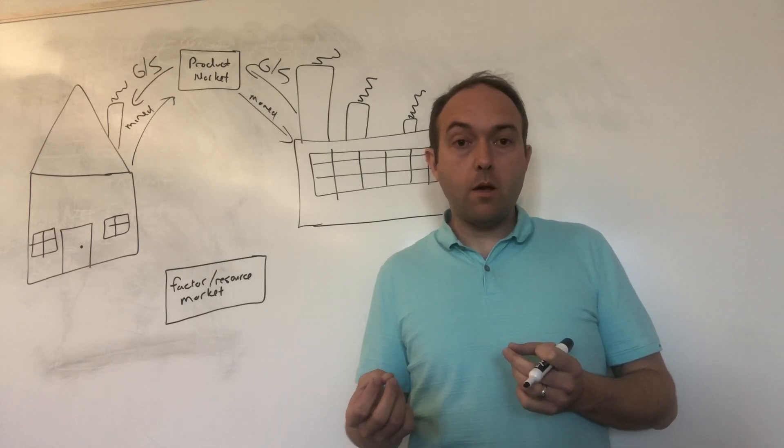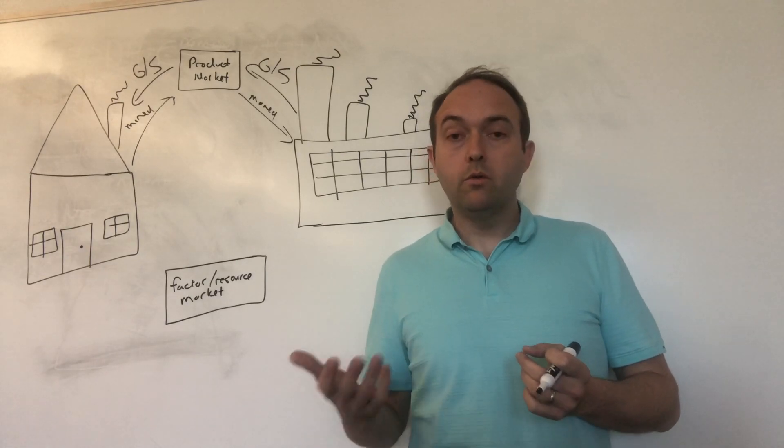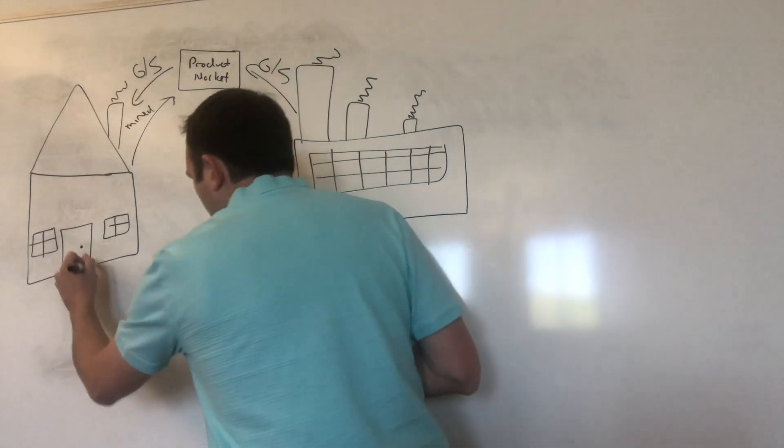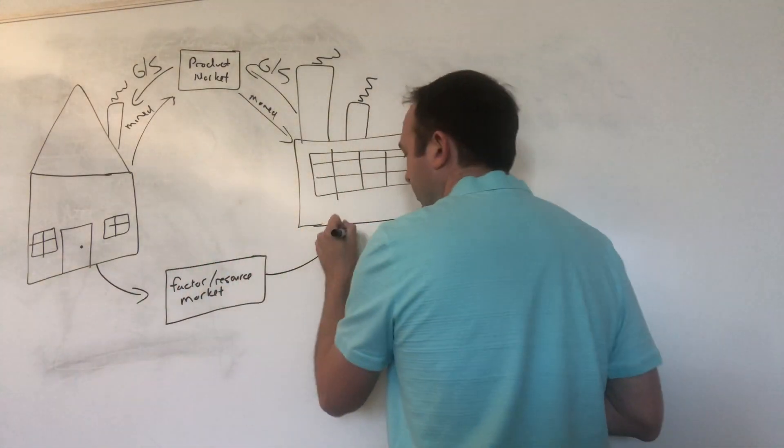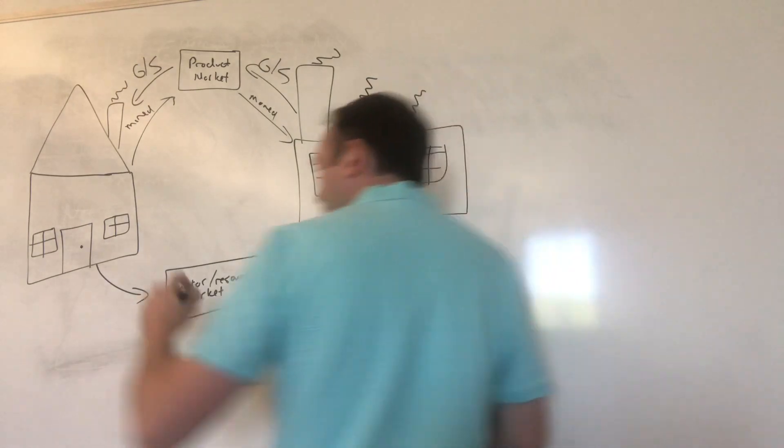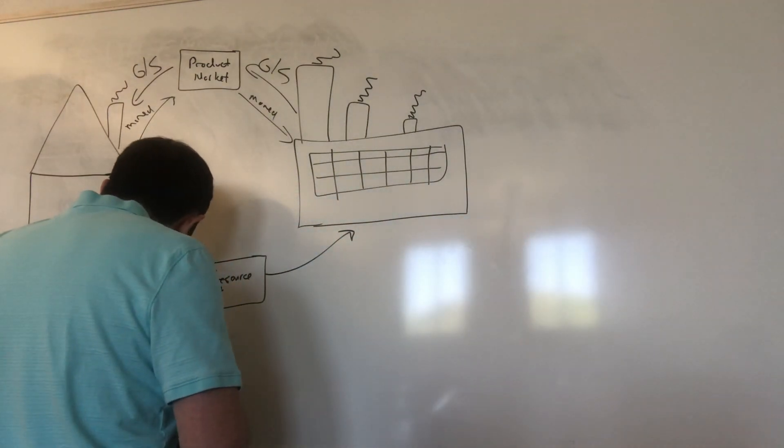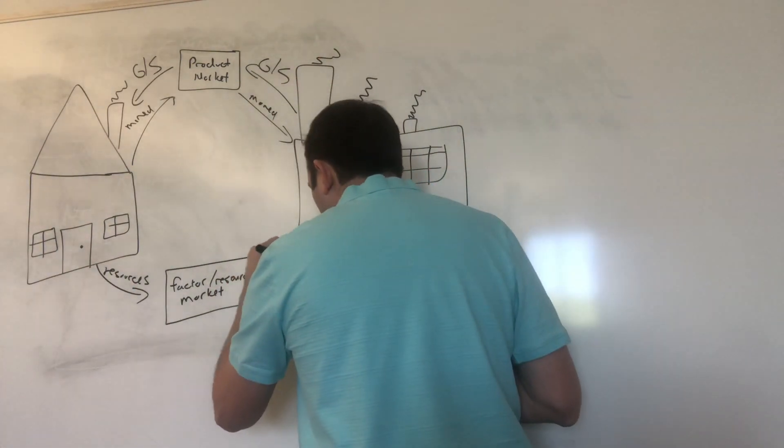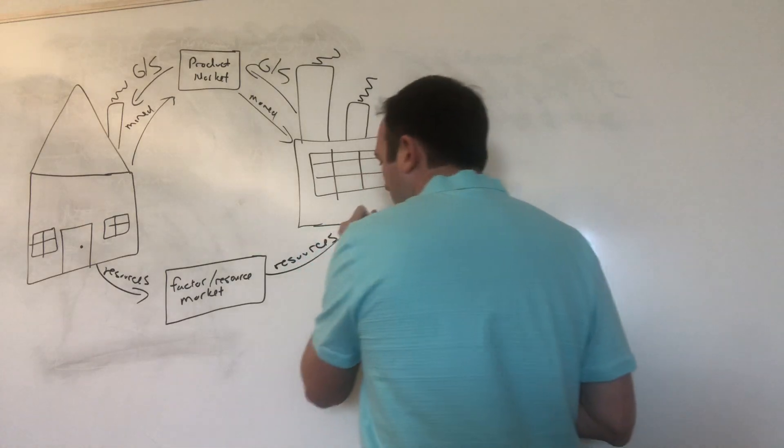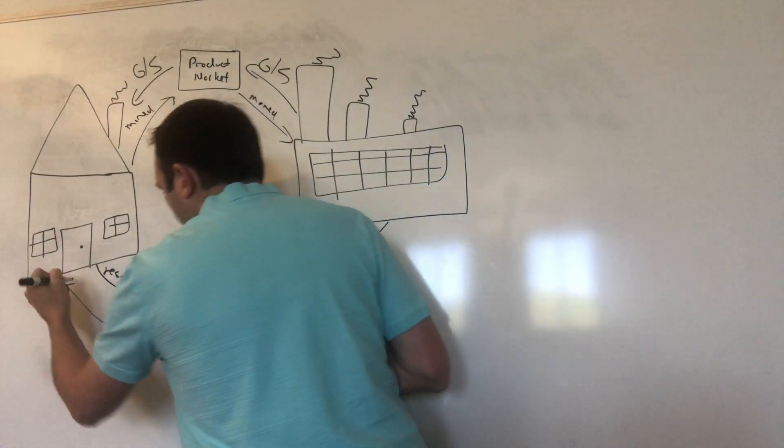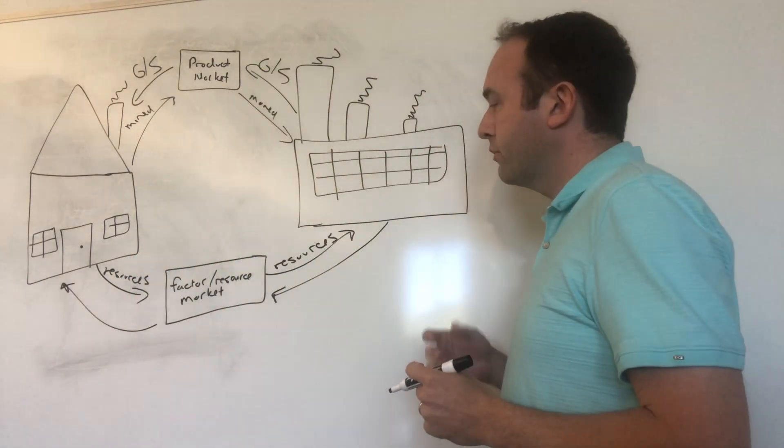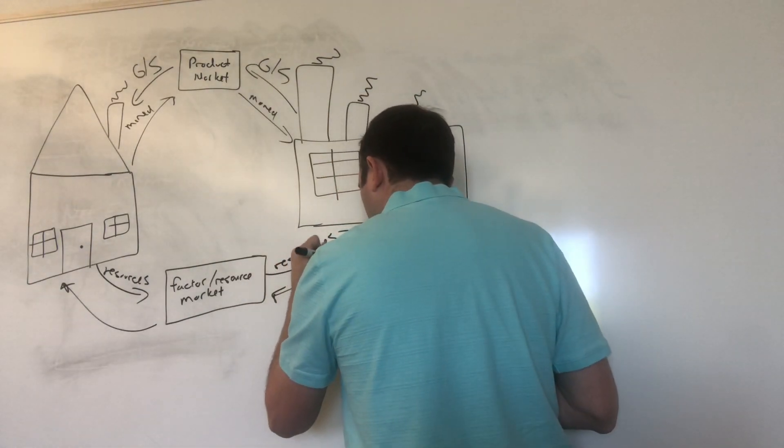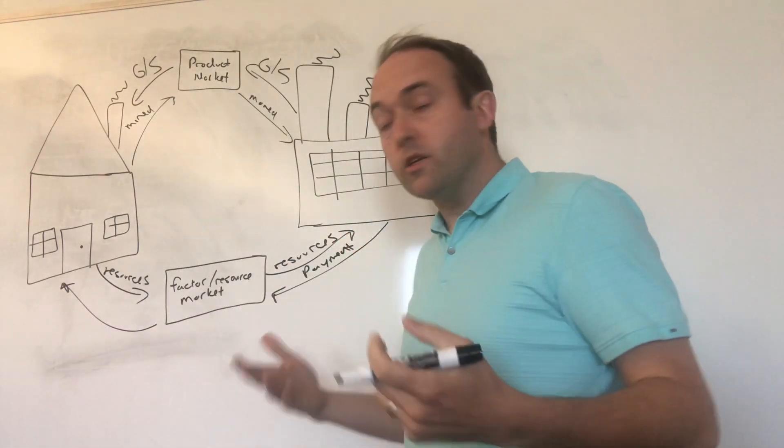This is what it looks like for these flows. Resources flow out of households and into firms. Most common resource that's transacted here would be labor. And then payment for those resources goes from the firm over to households. You might think about this as getting a wage for your labor.